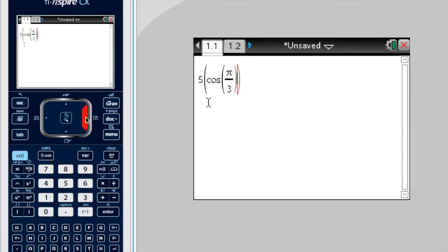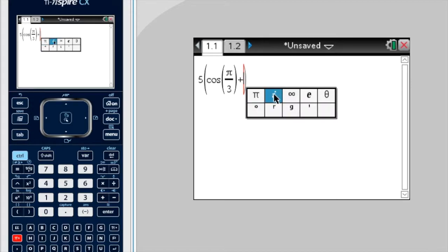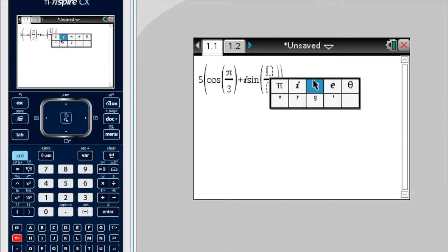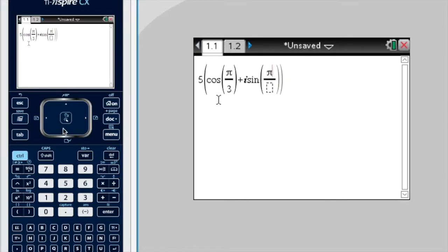Okay, get out of that inner fraction, then plus, and I want i, so I press pi again, but then choose i, times sine, and then I have to do pi on 3 again. So control, divide, choose pi, go down 3, okay, enter.